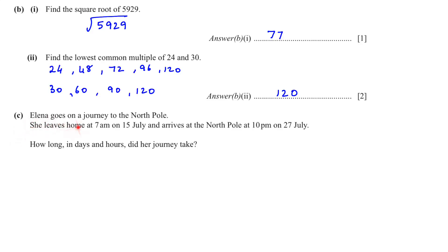Question number C. Elena goes on a journey to the North Pole. She leaves home at 7 a.m. on 15 July and arrives at the North Pole at 10 p.m. on 27 July. How long in days and hours did her journey take? She leaves on 15 July and arrives on 27 July. 15 July to 27 July are 12 days. Then from 7 a.m. to 7 p.m. there are 12 hours, and we have to reach till 10 p.m., so 7 plus 3 will give us 10. 12 hours plus 3 hours total 15 hours. So the time she has taken is 12 days and 15 hours.